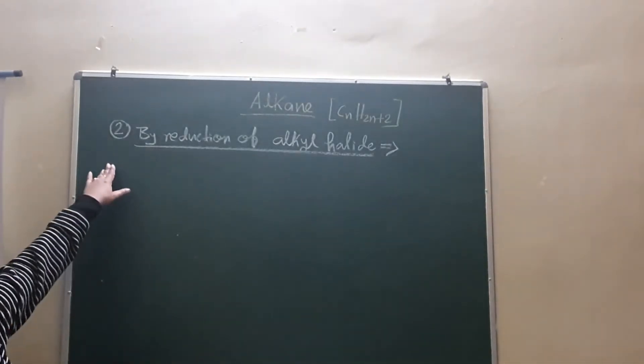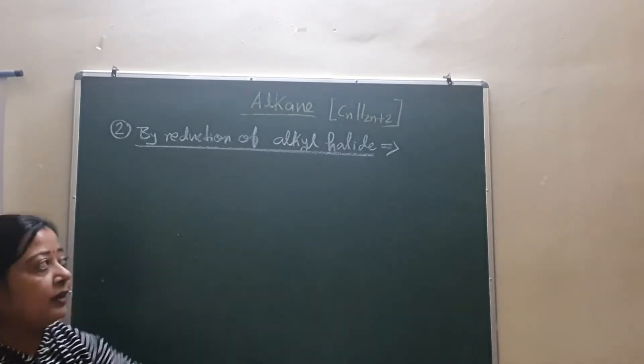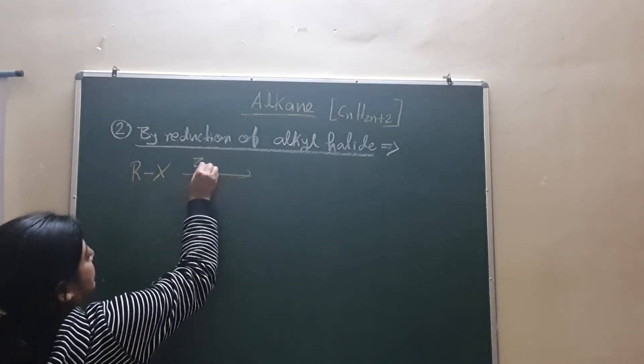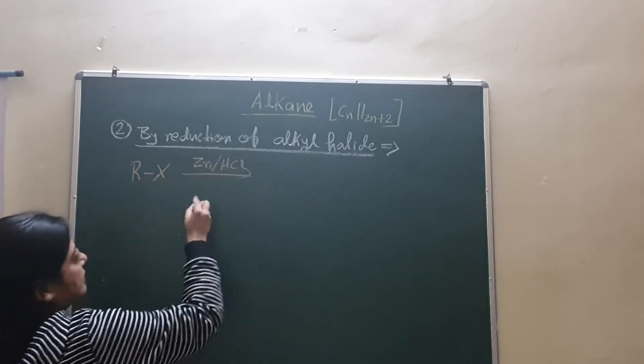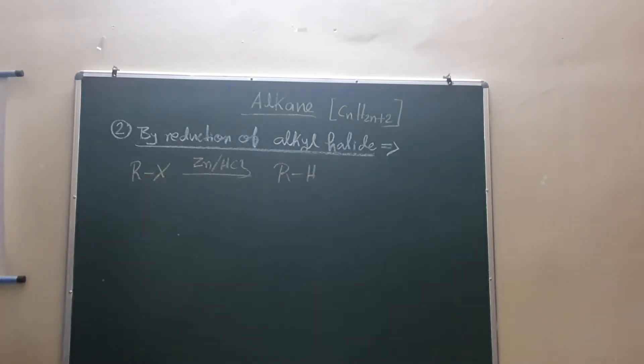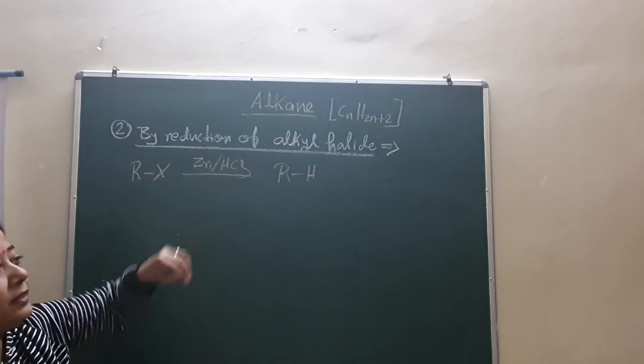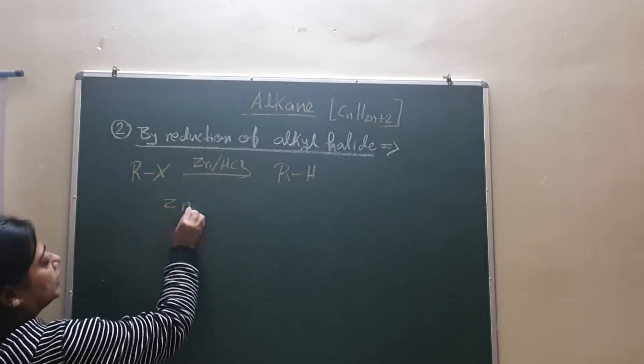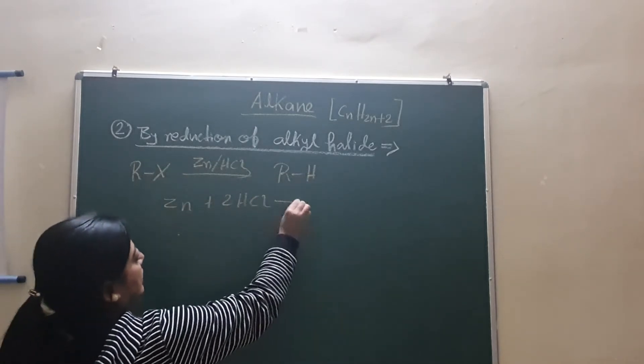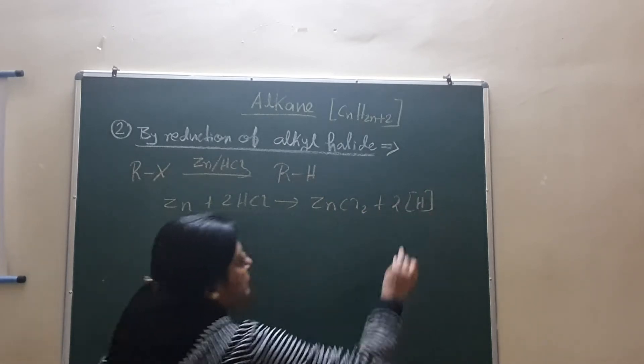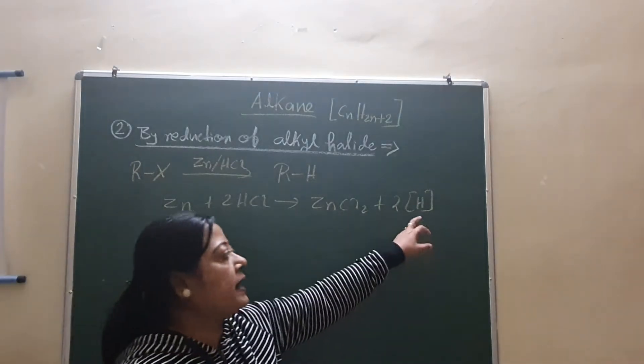Now we come to the second method: by the reduction of alkyl halide. We have to take the alkyl halide in the presence of zinc and HCl. Then we get the alkane. Now, matter of question is how? Look, in a beaker we'll first add alkyl halide, then zinc granules, and on top HCl. First reaction will occur between the Zn and HCl and they will form ZnCl2 and nascent hydrogen.